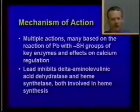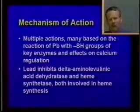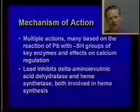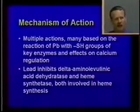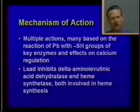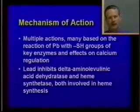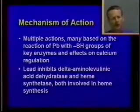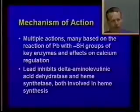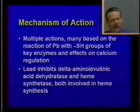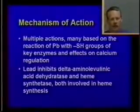The mechanism of action for lead toxicity involves many different effects. Lead interacts with key sulfhydryl groups in enzymes, inactivating them, and also affects calcium regulation — particularly important in neuronal tissue. Lead inhibits delta-aminolevulinic acid dehydratase (D-ALAD) and heme synthetase, both enzymes involved in heme synthesis, which accounts for much of the hematopoietic toxicity seen with lead.